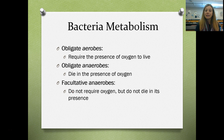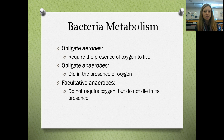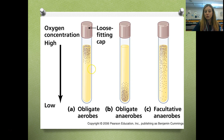The way bacteria metabolize can happen in different ways depending on whether oxygen is available. Obligate aerobes must have the presence of oxygen to live. Obligate anaerobes are anaerobic and will die in the presence of oxygen. Facultative anaerobes fall in the middle — they don't require oxygen, but they won't die if it is present. Test tubes show obligate aerobes near the top where oxygen is high, obligate anaerobes at the bottom, and facultative anaerobes distributed throughout.